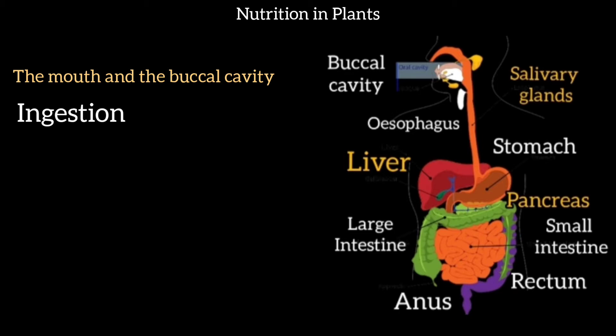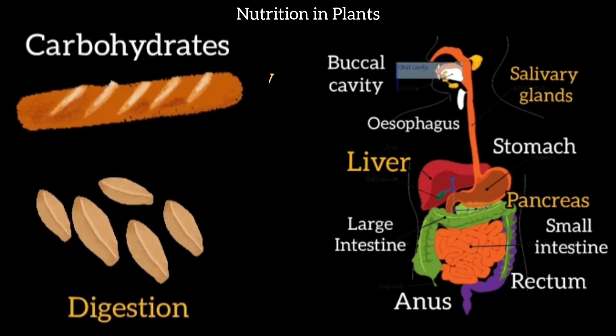So we can say that the digestion process starts from our mouth. Digestion means complex carbohydrates, which are in a big form, are converted into a simple form — broken down into small parts.